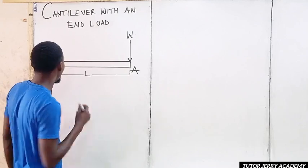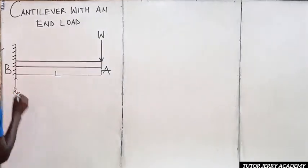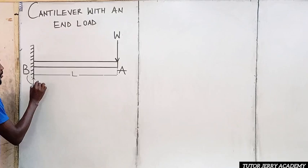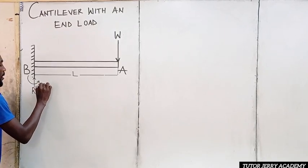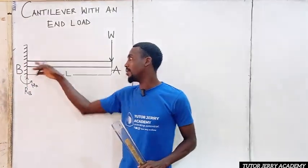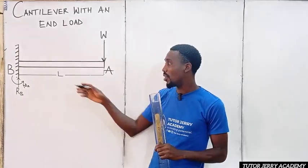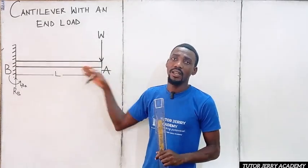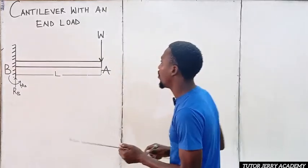This is our reaction at point B. Let's put our moment — moment at point A (M_A). I'm not going to include a reaction in the horizontal direction because we don't have any horizontal forces here.